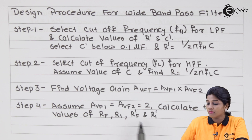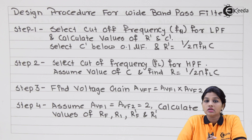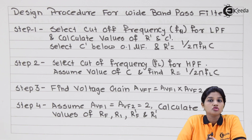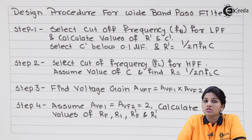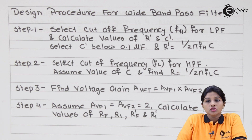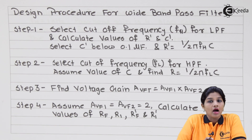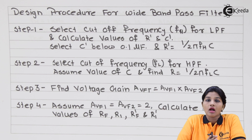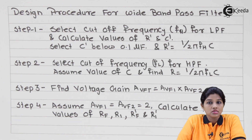The fourth step is: assume Avf1 equals Avf2 equals 2, and calculate the values of Rf, R1, Rf-dash, and R1-dash. Here, the gain value is assumed as 2 only if it is not given in the problem. If it is given, we use that value to calculate R1, Rf, R1-dash, and Rf-dash for the high pass and low pass filter respectively.